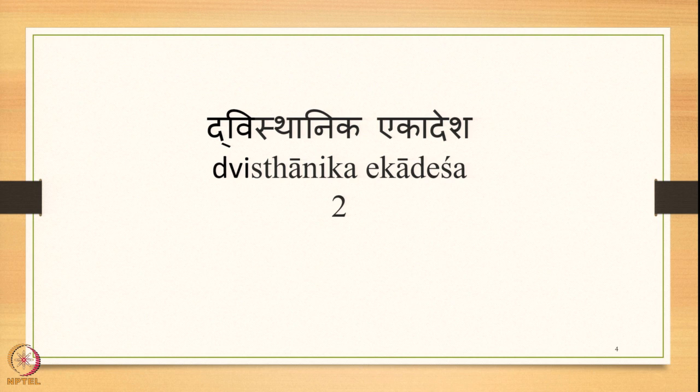We have stated that there are two classifications in Atsandhi. The first one being Ekasthanika Ekadesha, where there is one substituent and one substitute. We have already studied this classification and its two instances in detail. The two instances of this first classification are Yansandhi and Ayavayav Sandhi. Yansandhi is stated by the sutra Ikoyanachi. Ayavayav Sandhi is stated by the sutra Echoyavayavah. We have studied both these sutras in detail.